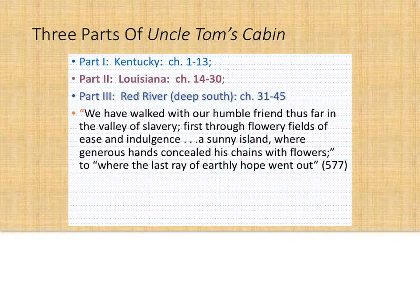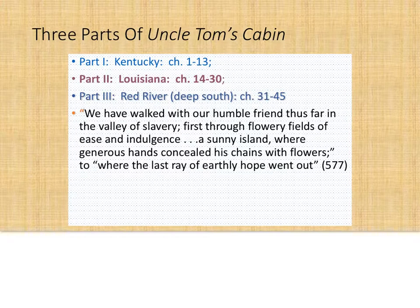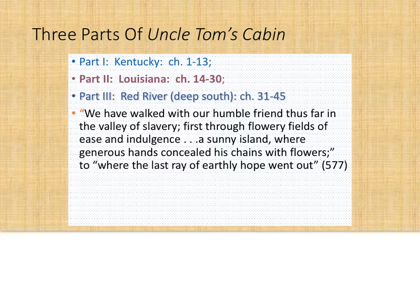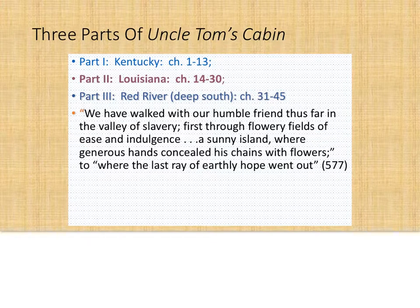One of the clues to this division is given towards the end of the book in a quotation on page 512. We can get a clue of the plot dimensions, its climax, its various conflicts, and its denouement through this kind of journey into the Deep South. We start out in the purportedly friendliest state to slaves, Kentucky, next to Louisiana, where she indicates a kind of travel through flowery fields of ease and indulgence — a sunny island where generous hands concealed his chains with flowers.